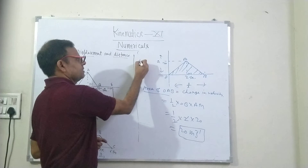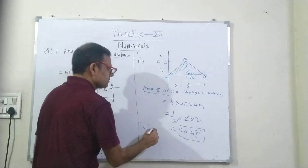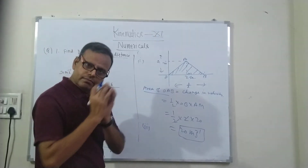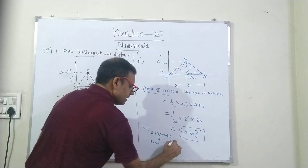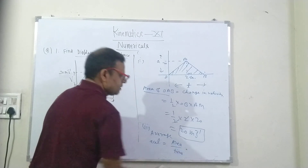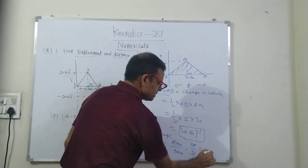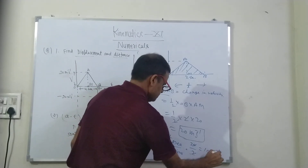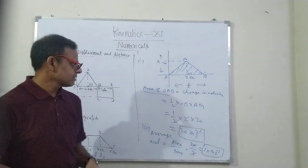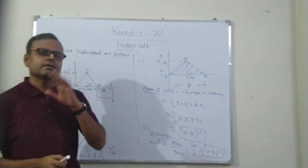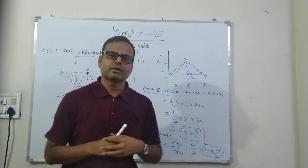Another important concept is average acceleration. Average acceleration from one point to another will be total area divided by total time. So average acceleration equals area divided by time. The area is 20 and the time taken is 2 seconds, so average acceleration is 10 meters per second squared. Both change in velocity and average acceleration are important concepts that can be calculated from the acceleration-time graph.